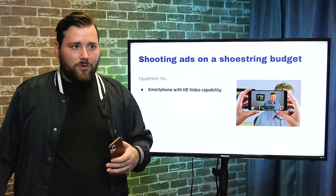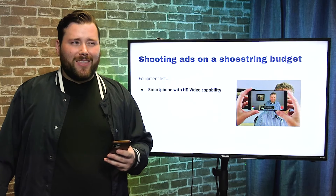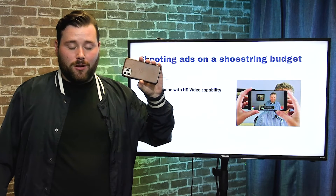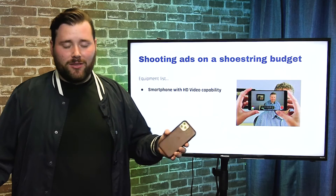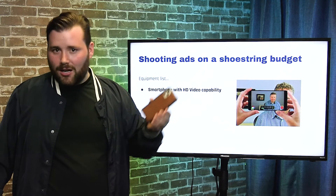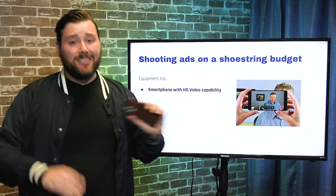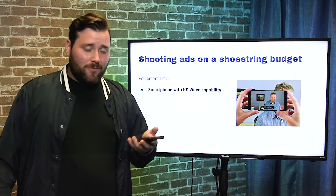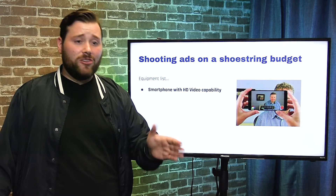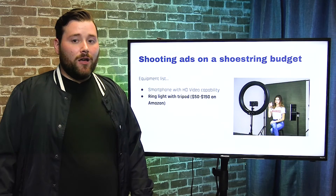Ten years ago you'd pay a thousand dollars for a camera shooting in standard definition — 720 by 480. Now your phone shoots in 4K, way more than standard definition. Your smartphone is a movie studio in your pocket. Most smartphones — a new Samsung, Google Pixel, or iPhone — have video quality better than the best cameras we had 10 years ago. This is all you need: a smartphone with HD video capability.